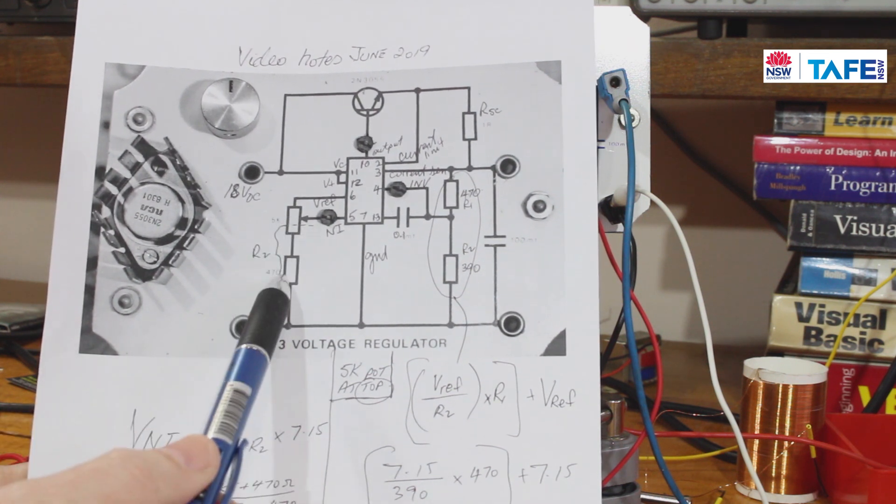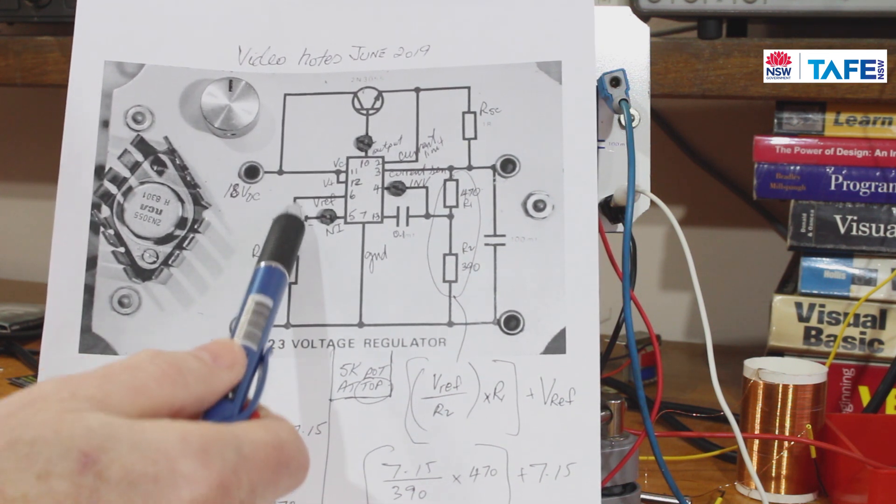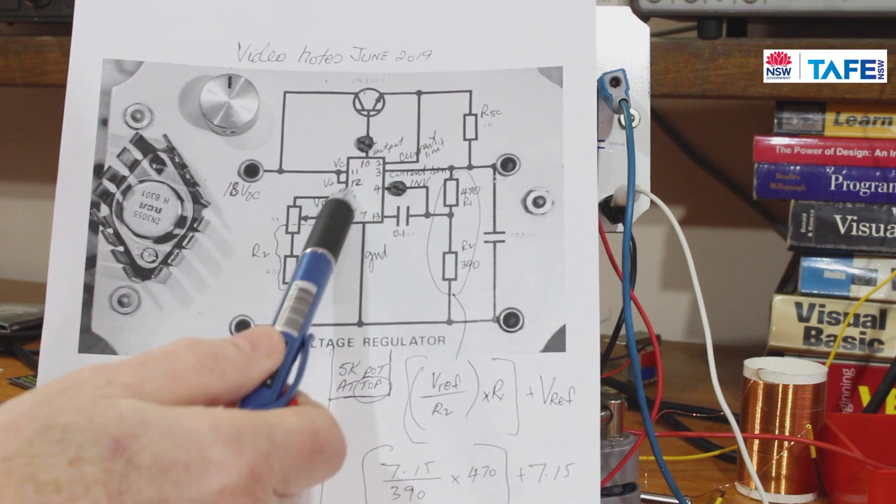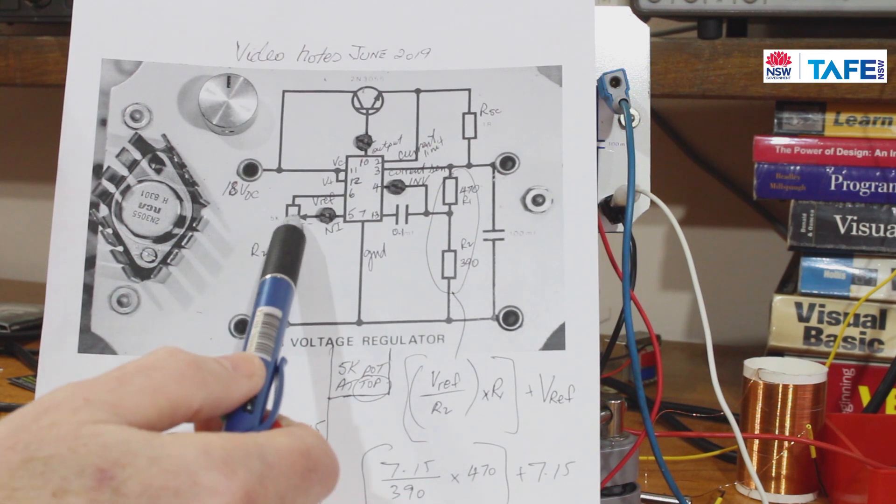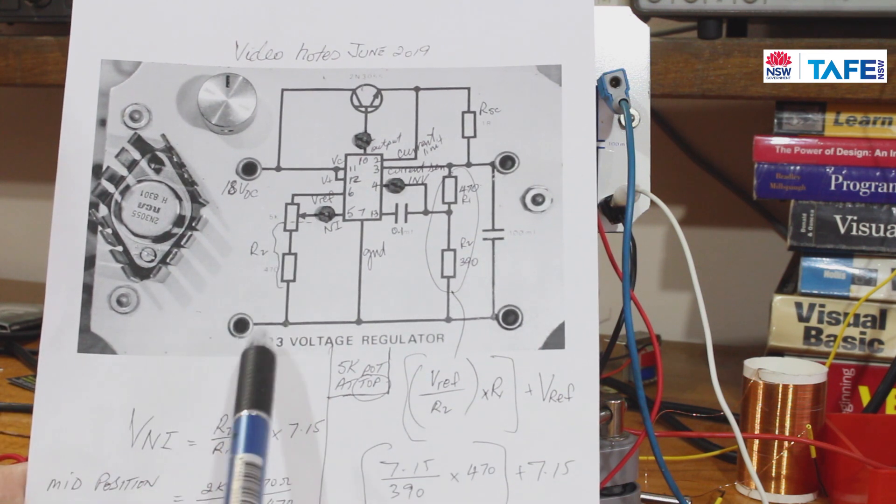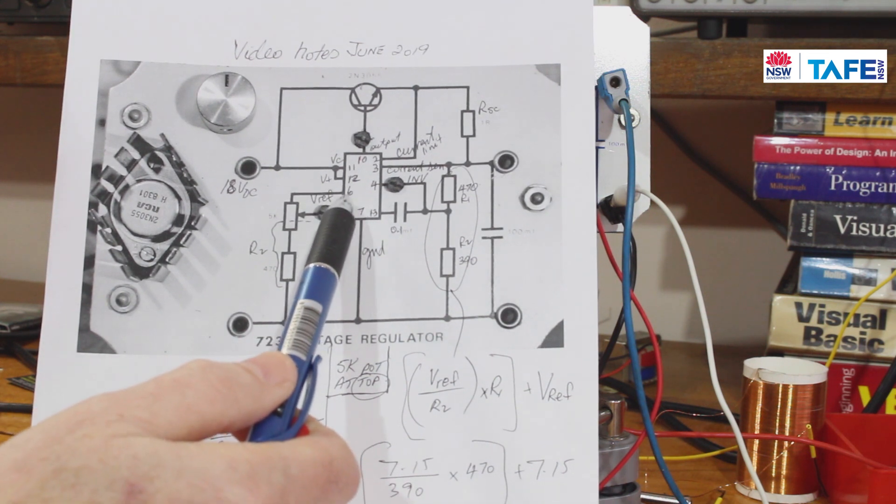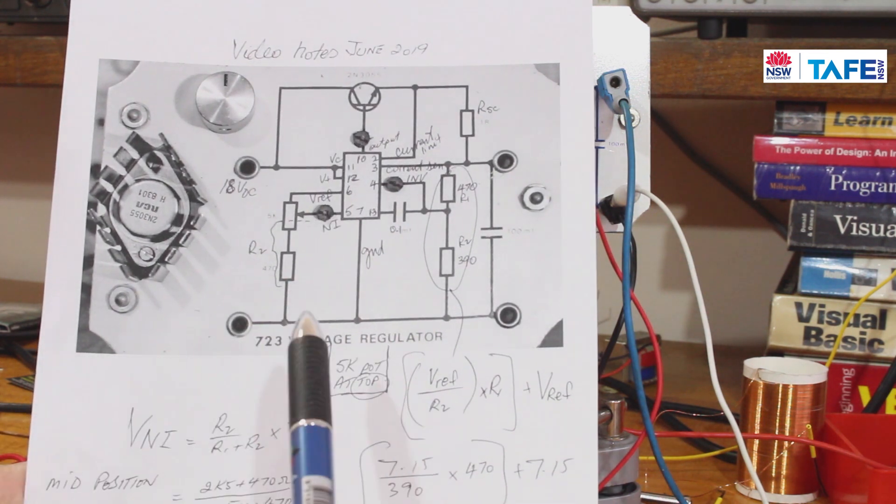From pin 6 and pin 5 will be joined together. I'd have 5470 ohms going down to ground. Ideally then the voltage coming out of pin 6 is going to be exactly what's on pin 5, that's 7.15 volts.